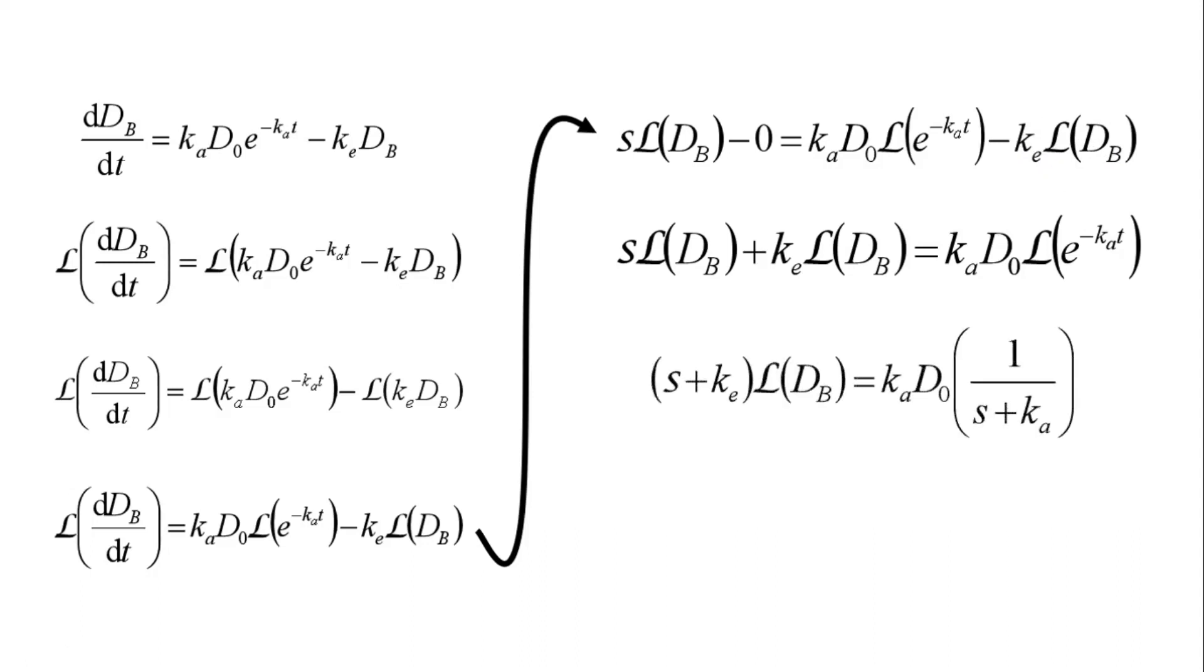On the right-hand side, we can actually evaluate the Laplace transform of this exponential term. You can look up any Laplace transform table, and it will tell you that the Laplace transform of e to the negative constant t is 1 over s plus that constant. We can divide both sides by this s plus ke term to finally get an expression for the Laplace transform of DB.